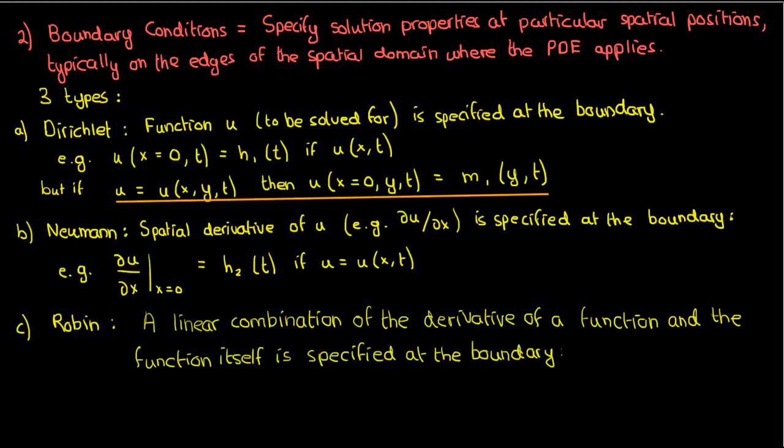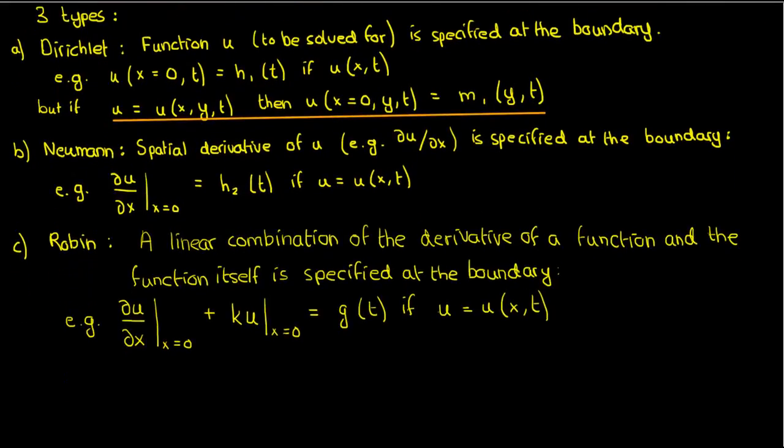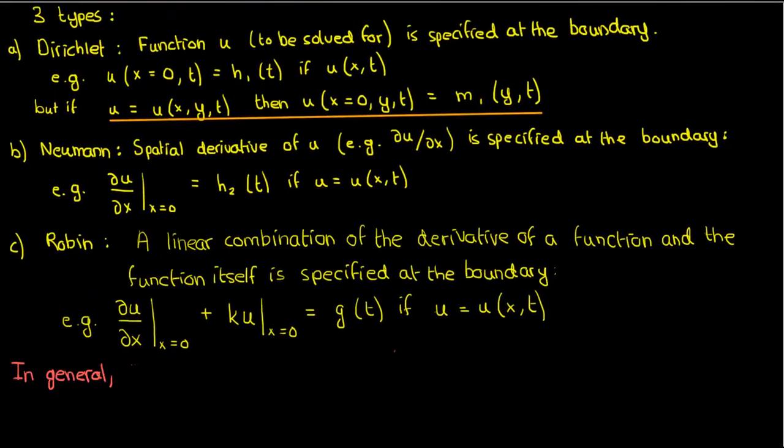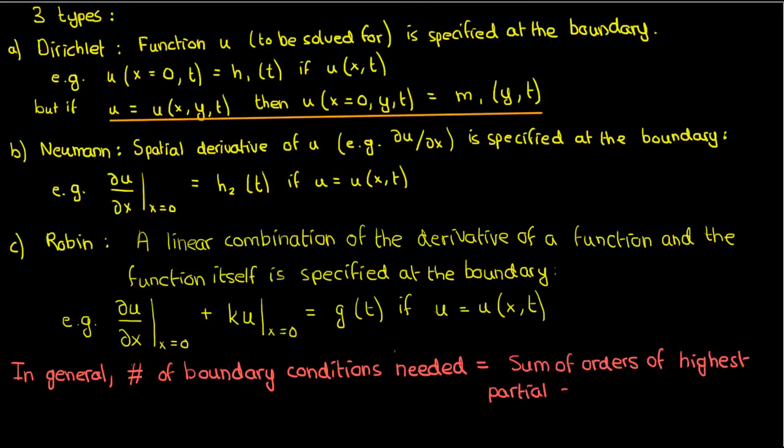The same would apply to the third type of boundary condition, called the Robin boundary condition, in which a linear combination of the derivative of the solution at the boundary and the value of the function at the boundary is specified. So a Robin boundary condition is very much like a Dirichlet boundary condition and a Neumann boundary condition put together.